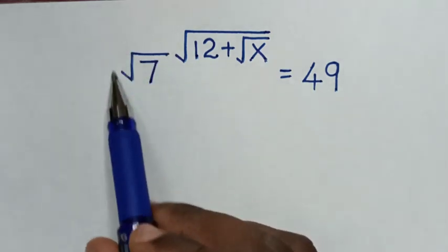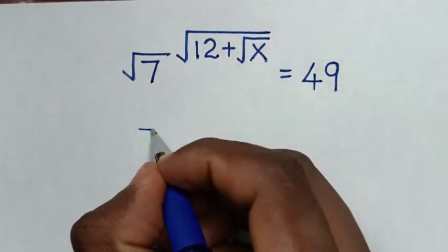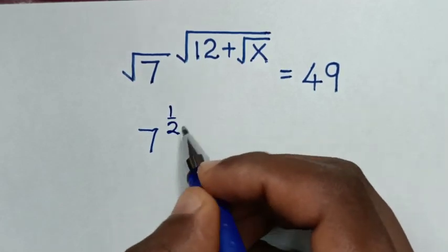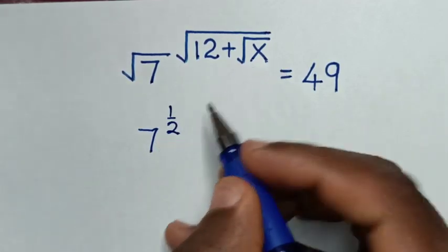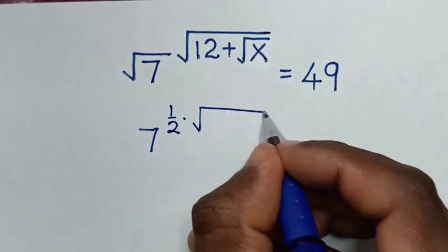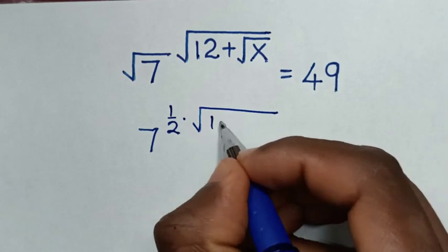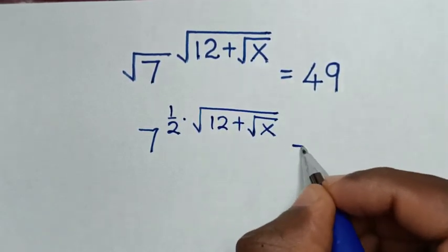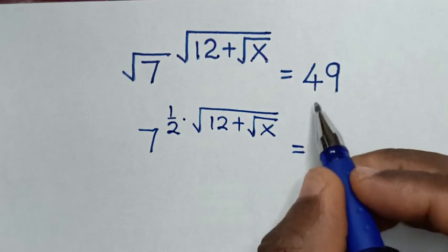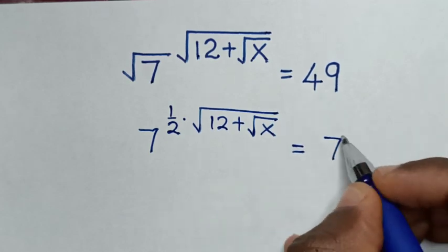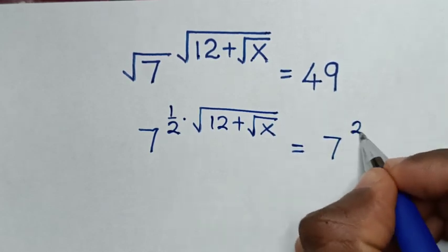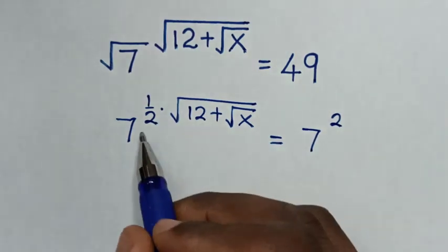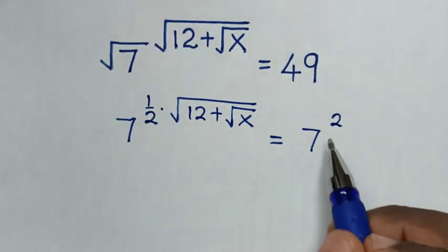Now, from here, square root of 7 is the same as 7 to the power of one half. Then, this times square root of 12 plus square root of x is equal to 49, which is the same as 7 squared. Now, from here we have the same base of 7, so we'll compare these powers.